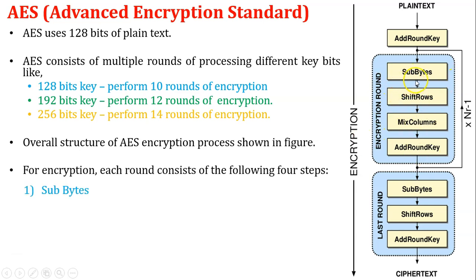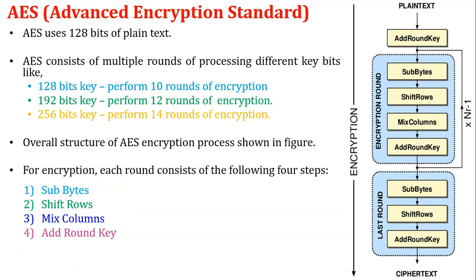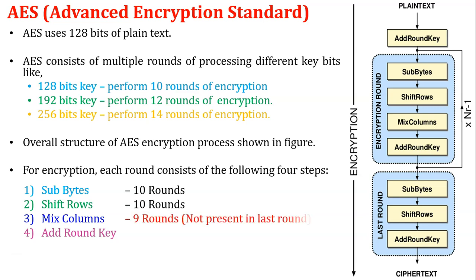The first step is substitution bytes, the second is shift rows, the third is mix columns, and the fourth is add round key. For a 128-bit key, 10 rounds of encryption are performed. Substitution bytes and shift rows each perform 10 rounds. Mix columns performs only 9 rounds, because it is not present in the last round. Add round key is performed 10 rounds. These four steps are called AES transformation functions.